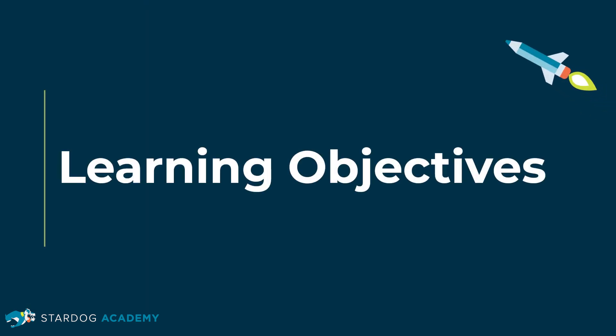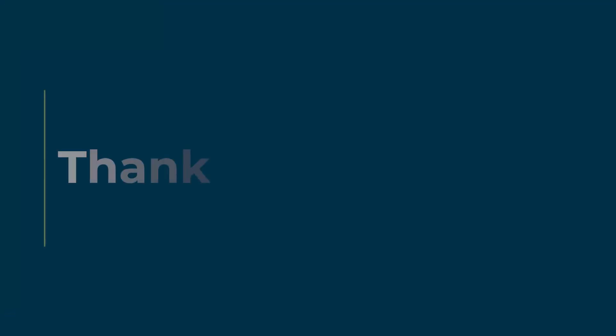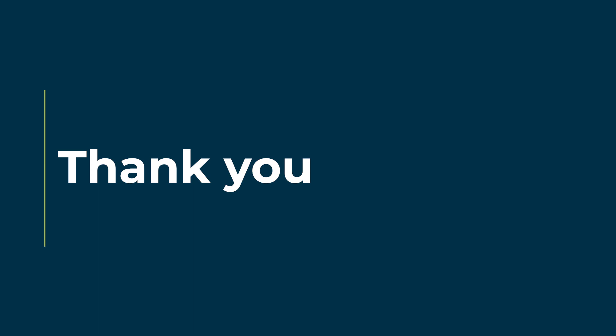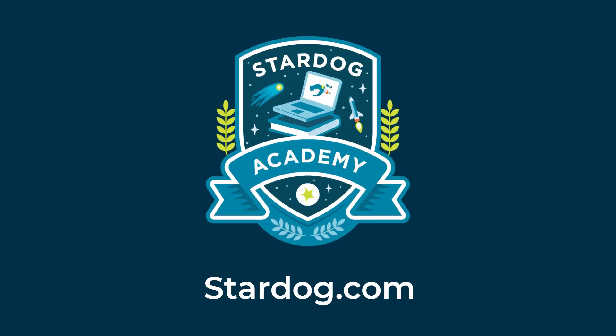In this training session, you learned how to install Stardog and Stardog Studio on several types of systems, including installation steps for macOS, Linux, Docker, and Windows. You also learned how to start Stardog and Stardog Studio after installation is complete. Thanks for following along. If you have any questions, please review our frequently asked questions page or head to stardog.com/docs for additional information.